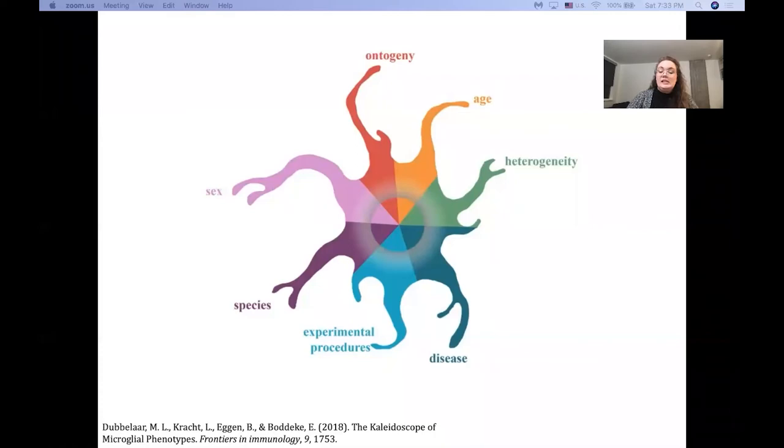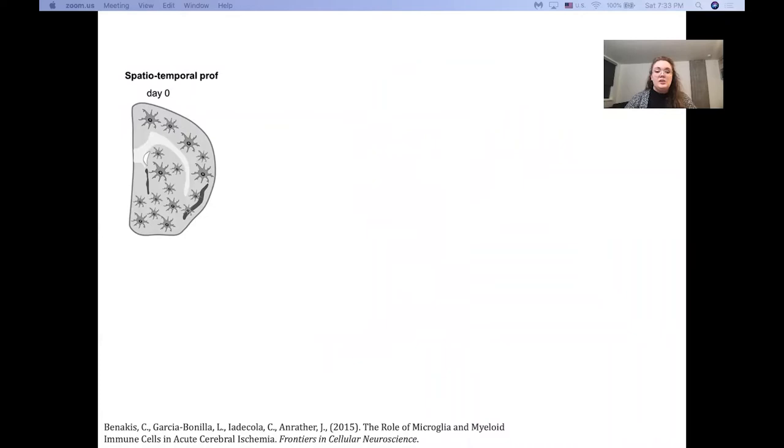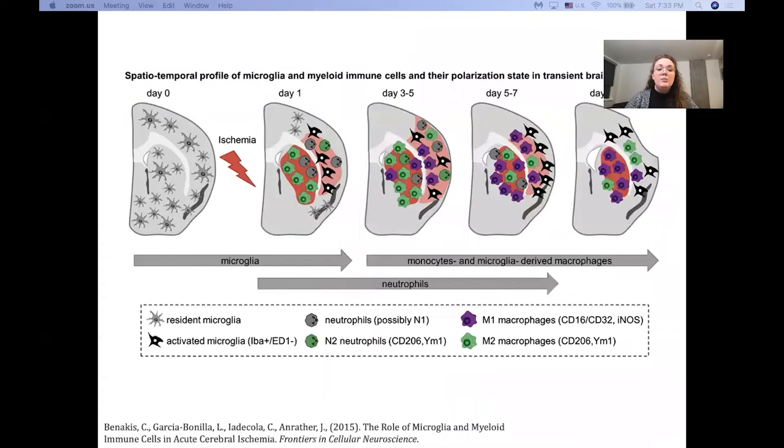Now, it's also been known and pointed out by Venakis in Frontiers in Cellular Neuroscience that in response to ischemia, what we're modeling with oxygen glucose deprivation, microglia not only change from resident microglia phenotype to activated microglia phenotype, they also likely change alongside monocytes into phenotypes of M1 and M2 macrophages.